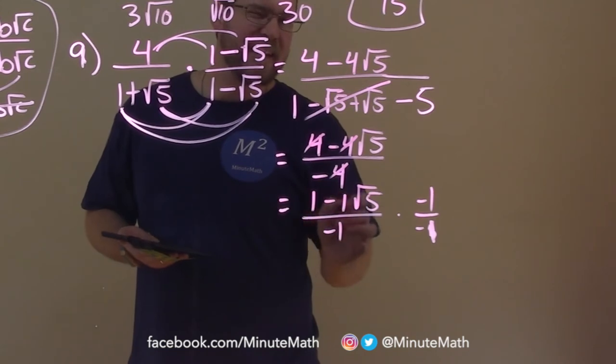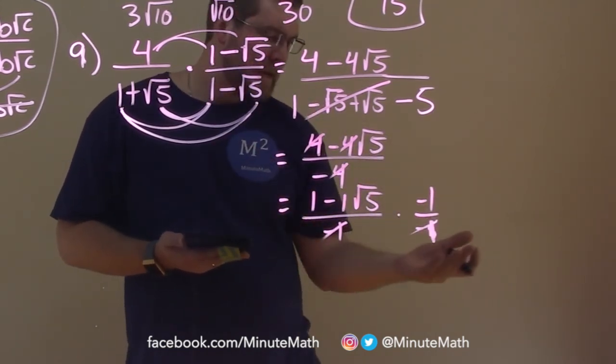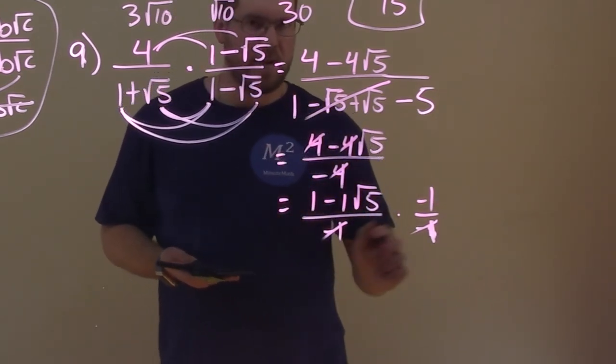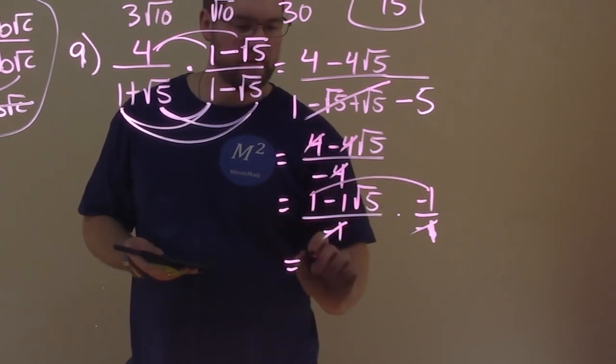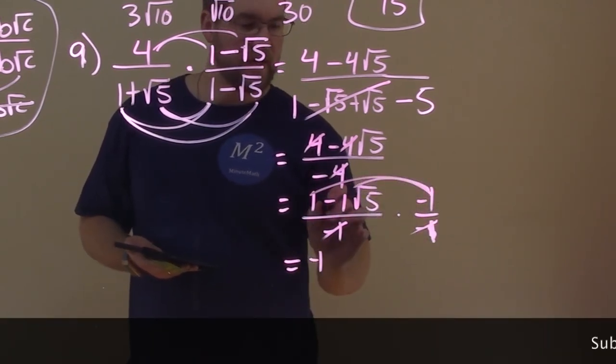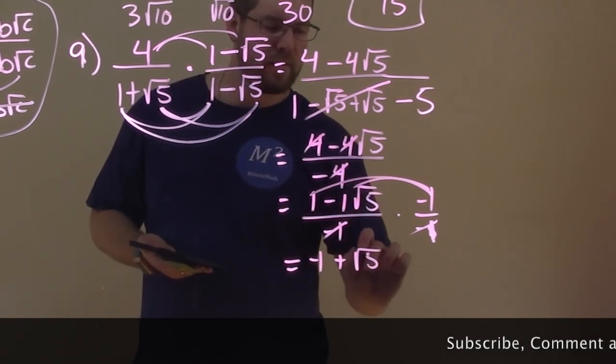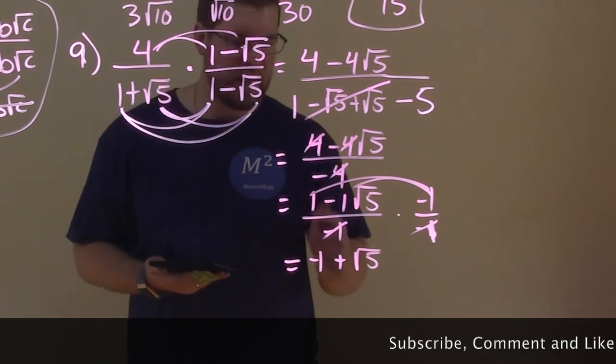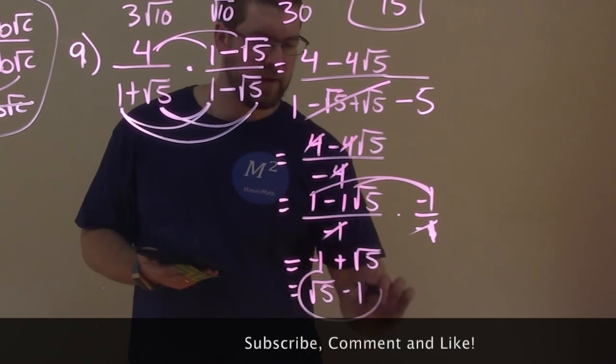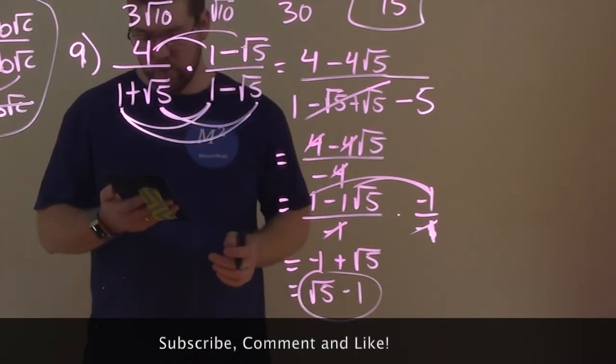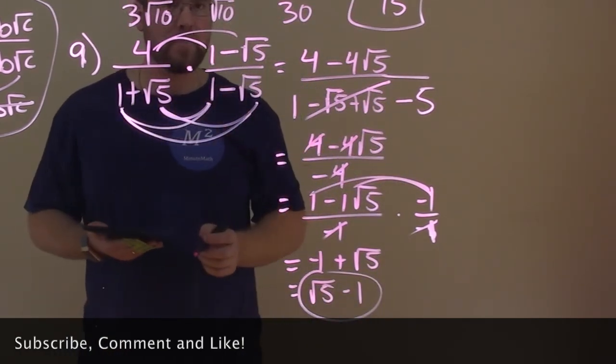And we don't need to write that in a denominator anymore. Negative 1 times this 1 out here is a negative 1. And then negative times this negative 1 becomes a positive 1. And we don't need to write the 1. So we have plus square root of 5. And sometimes you'll see it written as such, square root of 5 minus 1, but these are the same thing. And there we have our answer. Square root of 5 minus 1 is this, what we started with, in simplest form.